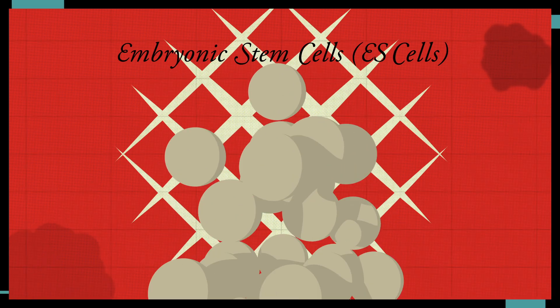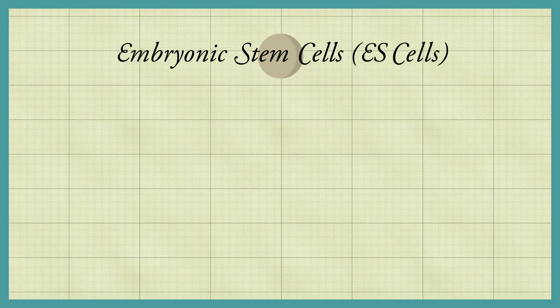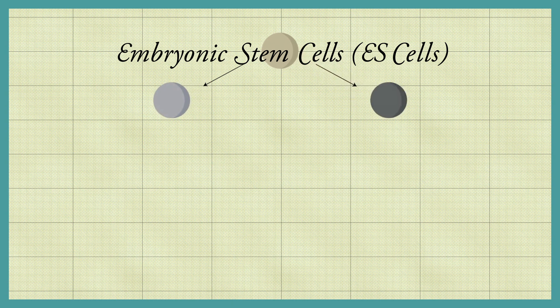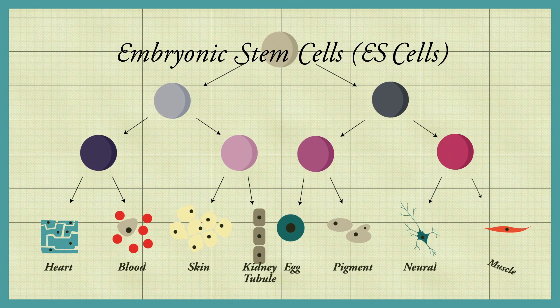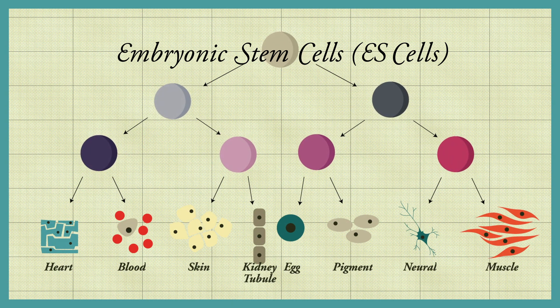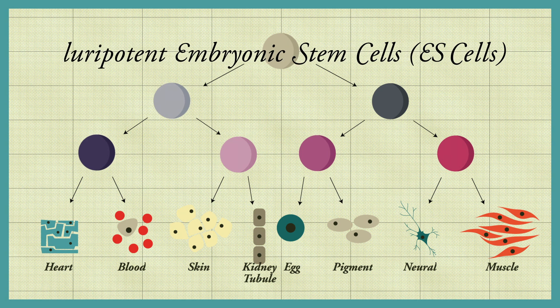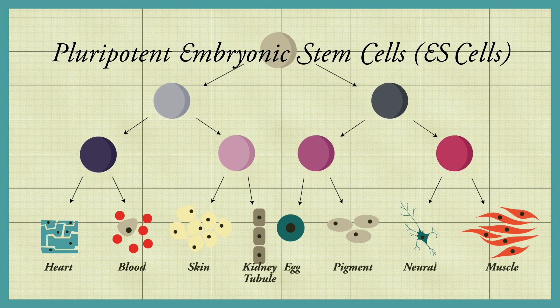Like cells in a developing embryo, ES cells retain the ability to form any type of cell in the adult body. Thus, ES cells are said to be pluripotent.